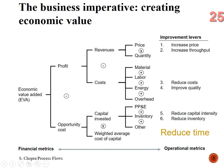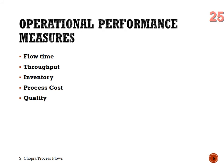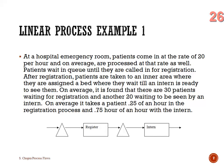Our operational measures are flow time, throughput, inventory, process cost, and quality. Now we get our first look at a linear process — one where every flow unit that enters goes through every step. Our example: a hospital emergency room. Patients come in at the rate of 20 per hour and on average are processed at that rate. They wait in queue until called for registration, then are taken to an inner area to wait for an intern.